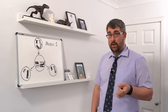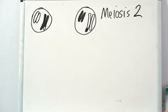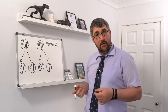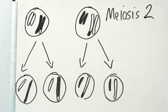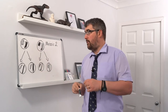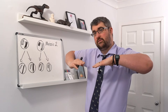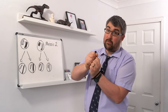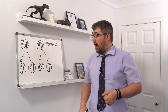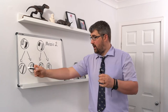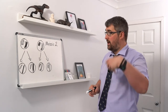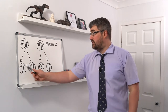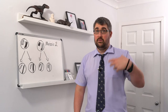We then move into meiosis II to form our gametes. The daughter cells from meiosis I undergo a second division — prophase II, metaphase II, and so on. The chromosomes are arranged along the cell's equator and are pulled apart into their sister chromatids, producing four daughter cells in total. Each is haploid with one set of chromosomes compared to the diploid original parent cell, and all four show genetic variation.